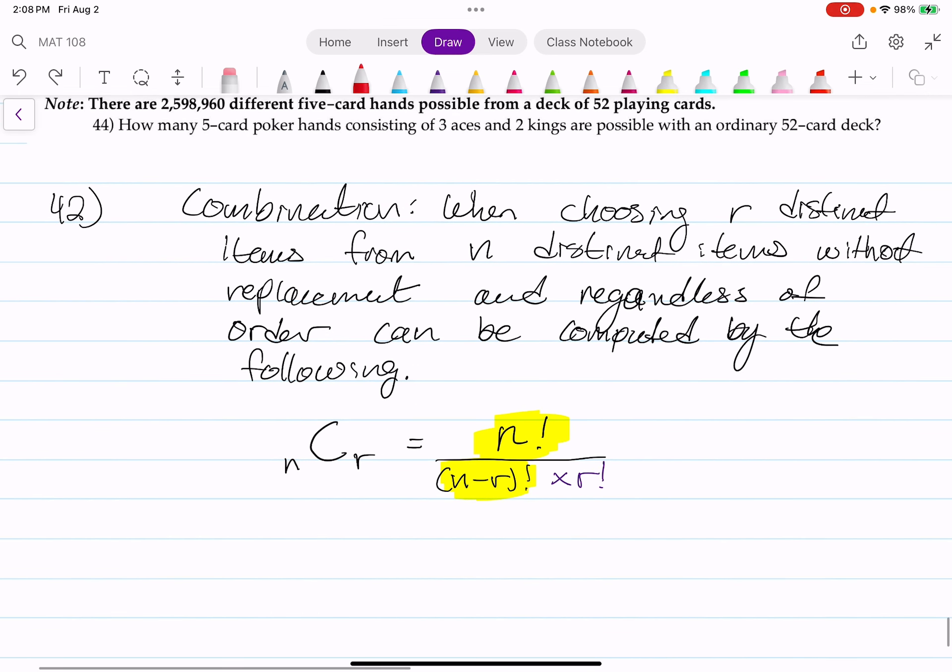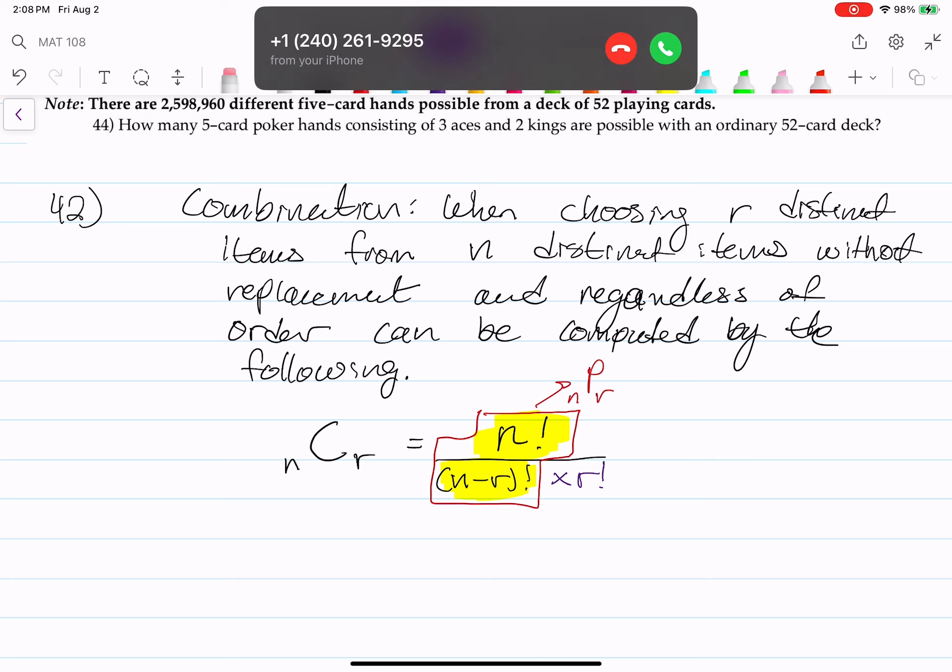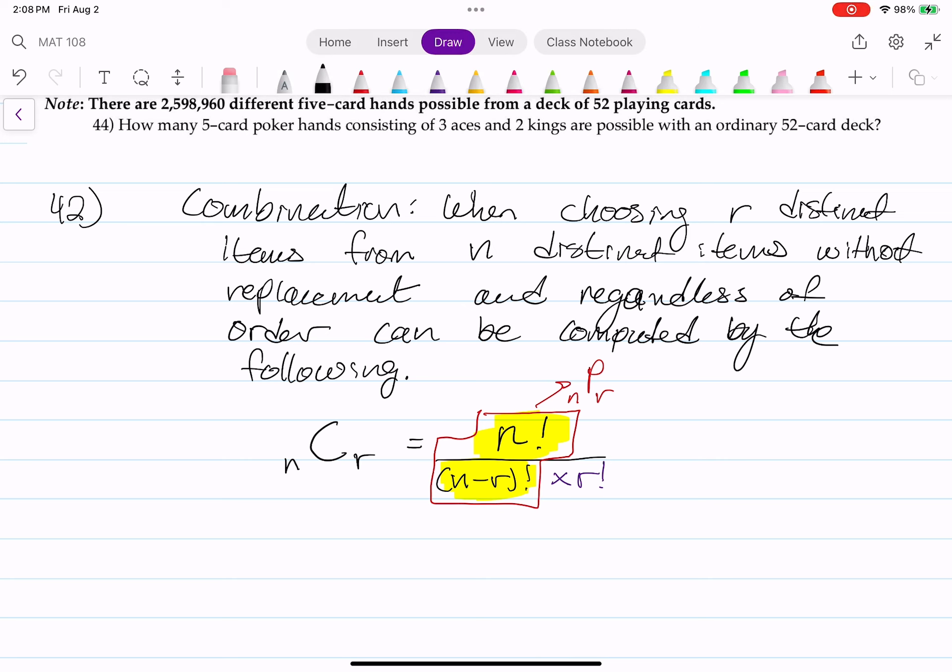This part of the formula right here looks oddly similar to the permutation formula. This is in fact the permutation formula. The permutation of n items choosing r. But we know permutation is, so we can say that this is also equal to the permutation of n choose r divided by do not forget the r factorial in your denominator. The r factorial.